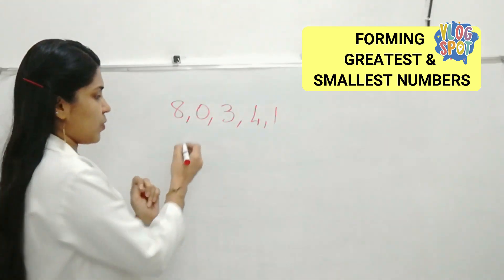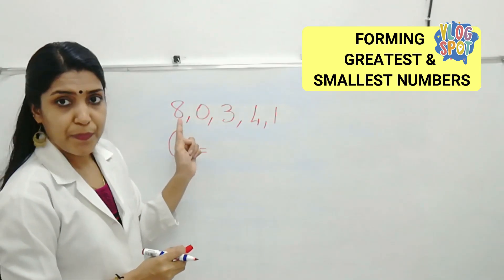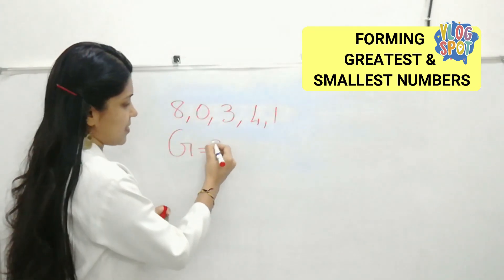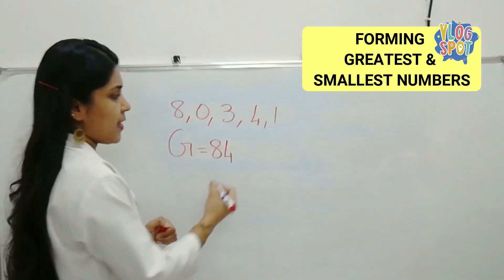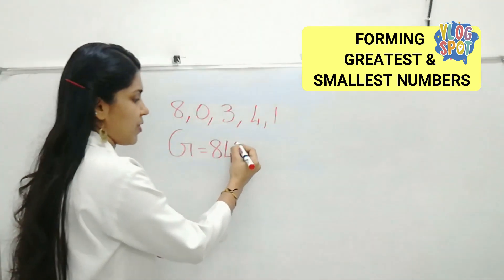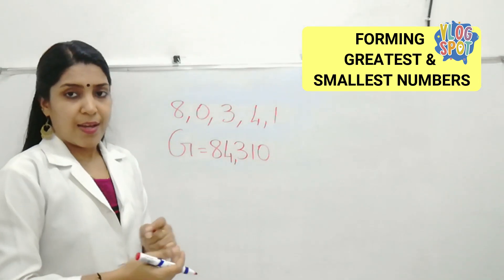Let's start with the greatest number. Which is the greatest digit here? It is 8. Then, second greatest is 4. Then what about the third? It is 3. Then 1, 0. 84,310.